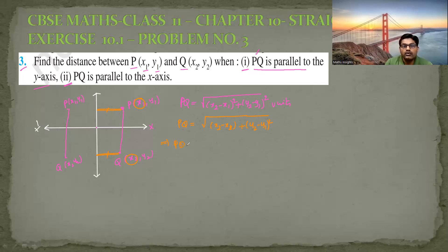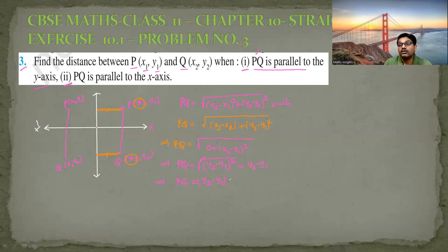This (x2 minus x2) will become zero, so PQ equals the square root of zero plus (y2 minus y1) whole square. Cancelling the square and square root, PQ equals y2 minus y1. Since sometimes y2 may be greater or sometimes y1 may be greater, the distance will never become negative. So to make it positive, we write PQ equals modulus of (y2 minus y1). This is the distance between P and Q when PQ is parallel to the y-axis.